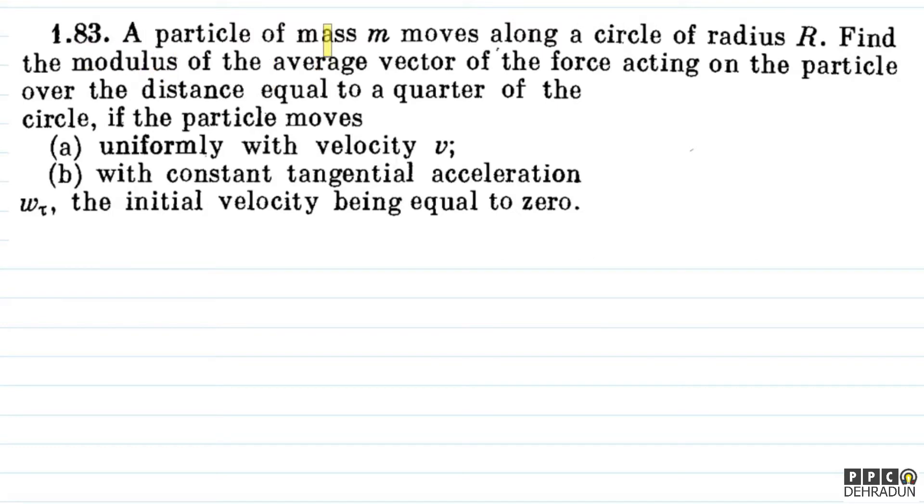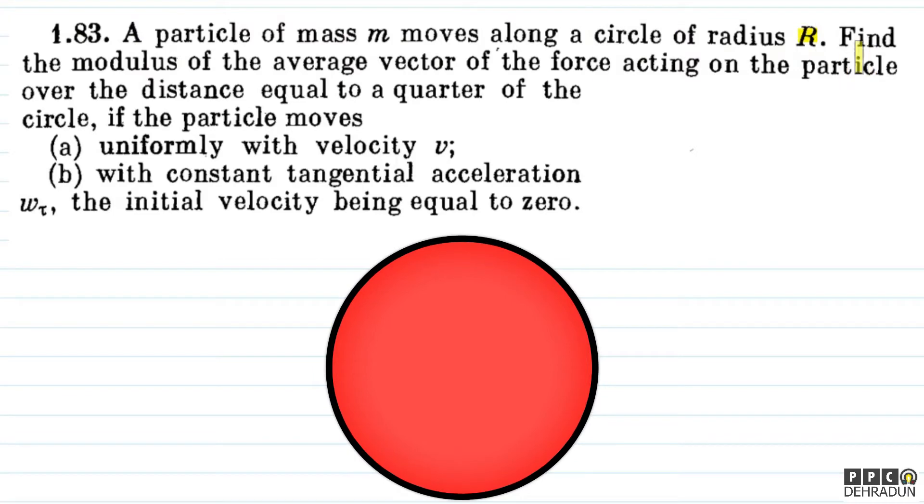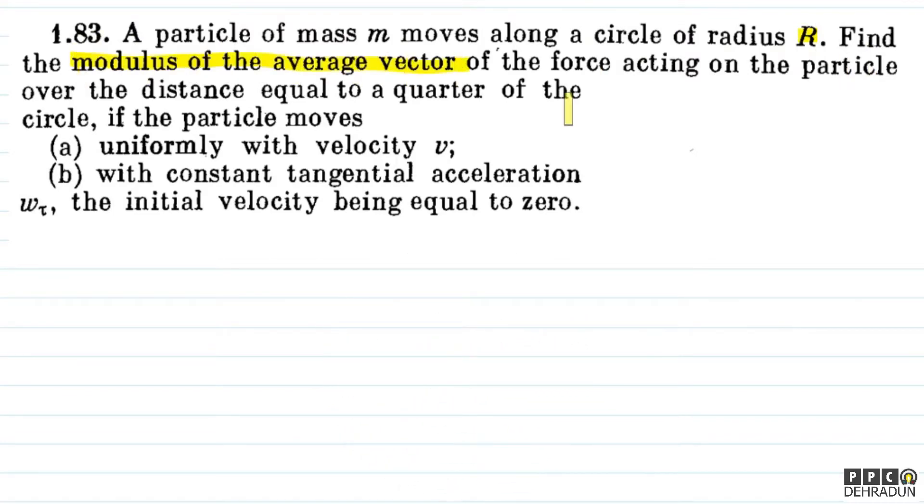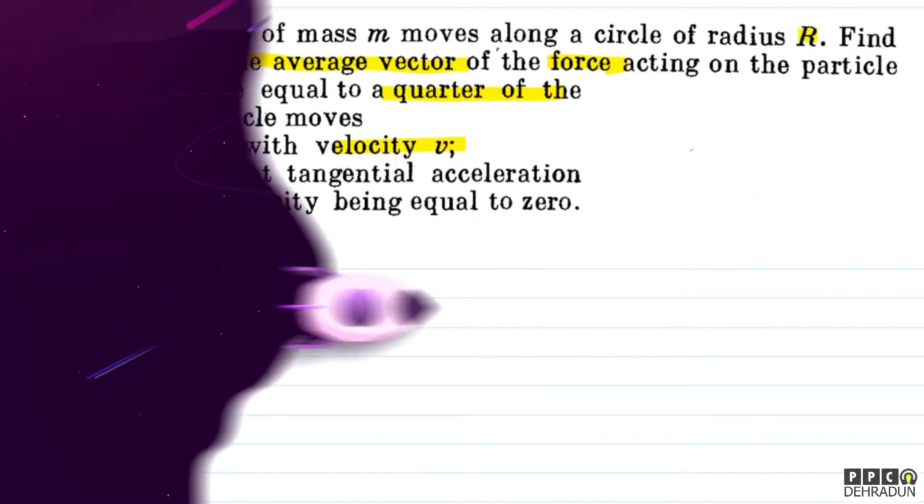The question says: a particle of mass m moves along a circle of radius capital R. Find the modulus of the average vector of the force acting on the particle over the distance equal to a quarter of the circle if the particle moves (a) uniformly with velocity v; (b) with constant tangential acceleration w_tau, the initial velocity being equal to zero.